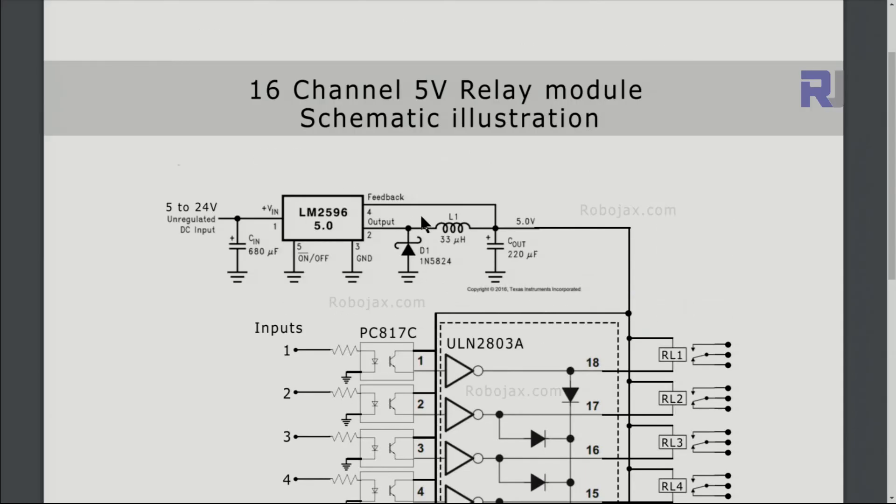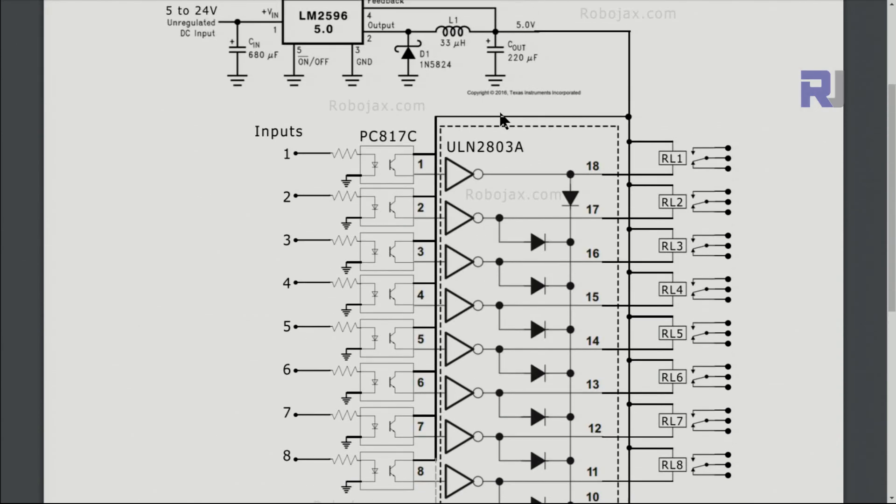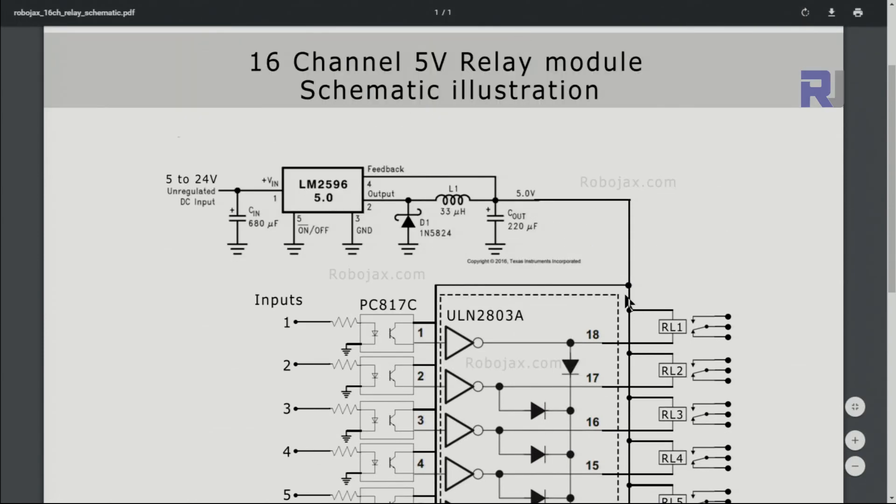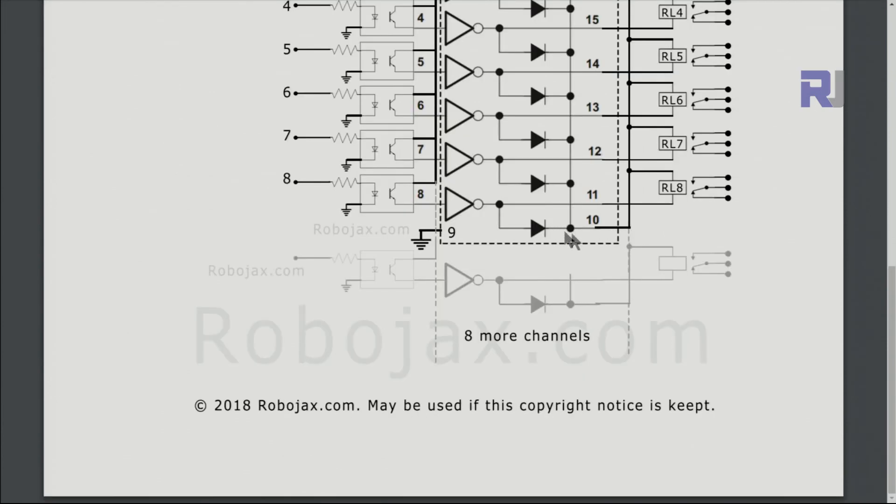This is a schematic diagram that I have just drawn, and this is a corrected version because the output voltage from the regulator—the 5 volts—have been connected directly to the relay and the common pin of this transistor array chip. This schematic diagram will also be provided.